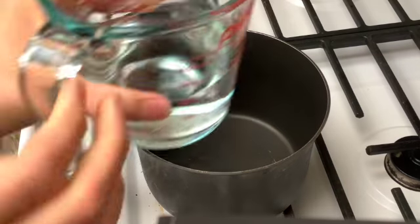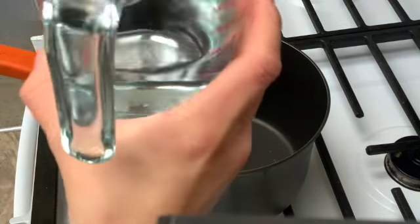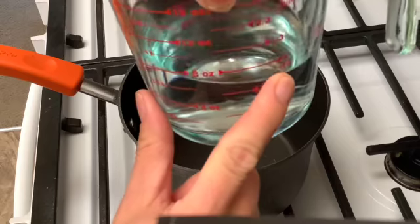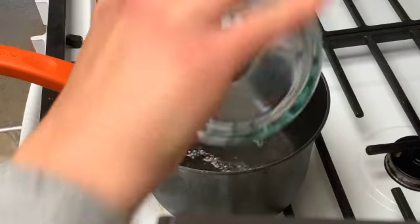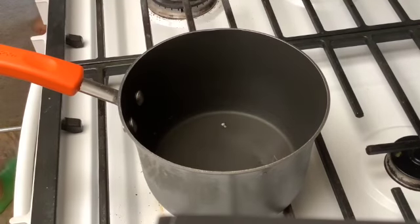Now go ahead and turn your burner on to medium heat and add your one cup of water to the pot. You're going to then place on a lid and bring that water to a roiling boil.